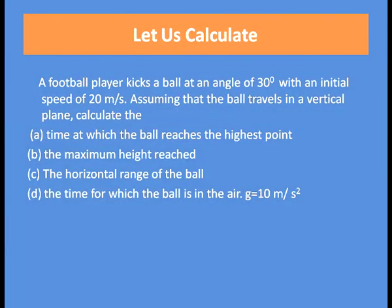Now let us do a numerical. Suppose a football player kicks a ball at an angle of 30° with an initial speed of 20 m/s. Assuming the ball travels in a vertical plane, calculate: the time at which the ball reaches the highest point, the maximum height raised, the horizontal range, and the total time for which the ball is in the air. Take g = 10 m/s².